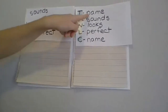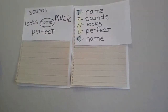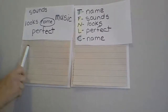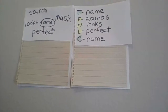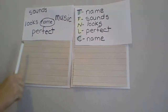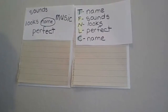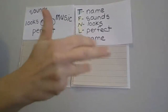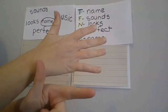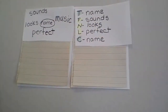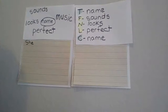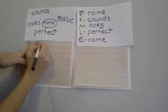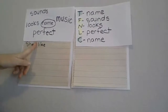My topic sentence needs to be about why Chrysanthemum likes her name. We don't start with 'the topic is.' But if the prompt is asking what are reasons why she liked her name, we would say: 'She liked her name for many reasons.' Say it with me — she liked her name for many reasons. That's what we're writing all about. Capital at the beginning for 'she.' The sight word that we know.